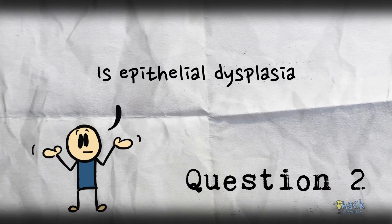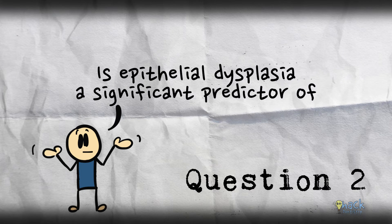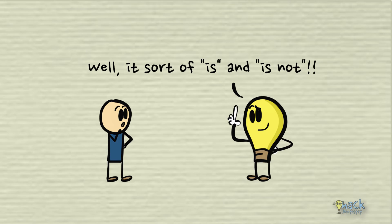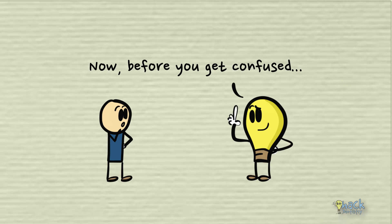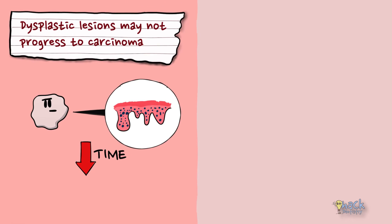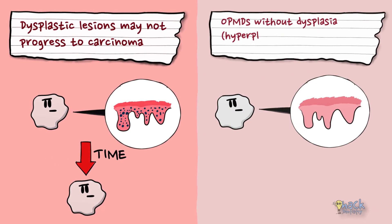Is epithelial dysplasia a significant predictor of malignant transformation of oral potentially malignant disorders? Well, it sort of is and is not. It has to be remembered that it is not inevitable that a dysplastic lesion will transform into oral cancer. There is evidence of dysplastic lesions not progressing to carcinoma and also oral potentially malignant disorders without dysplasia progressing to oral cancer.